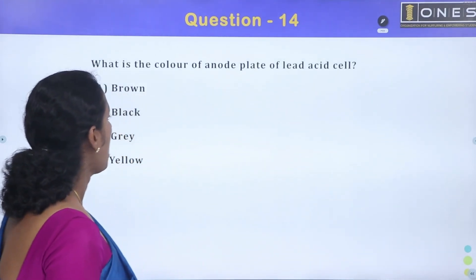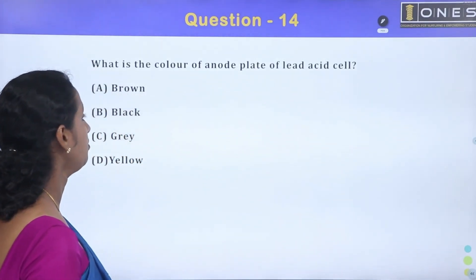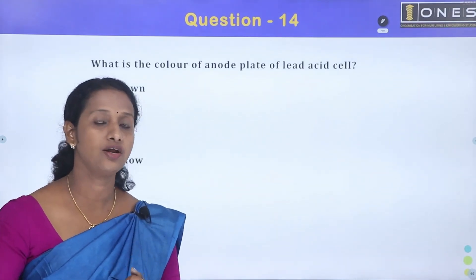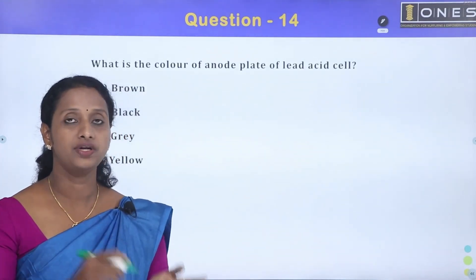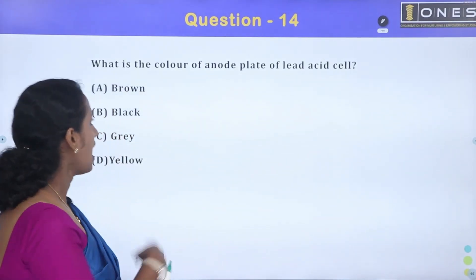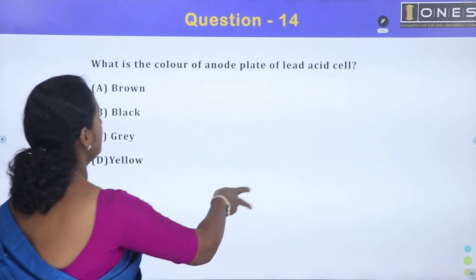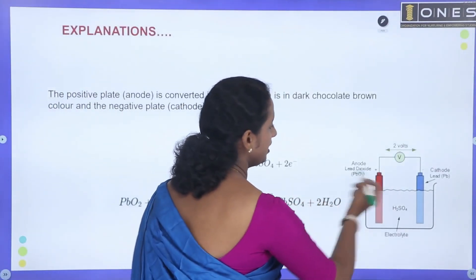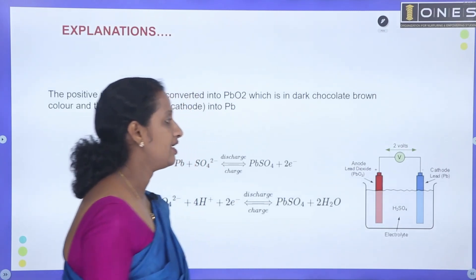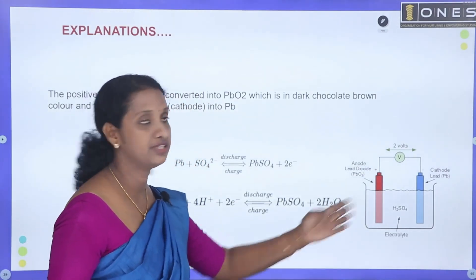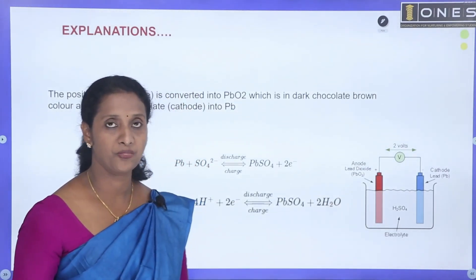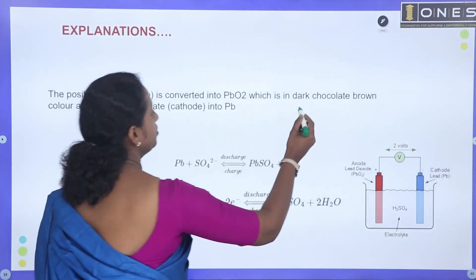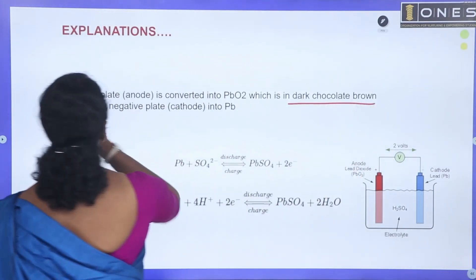What is the color of the anode plate of a lead-acid cell? The anode material in the lead-acid cell is lead dioxide, which is converted to a dark chocolate brown color.